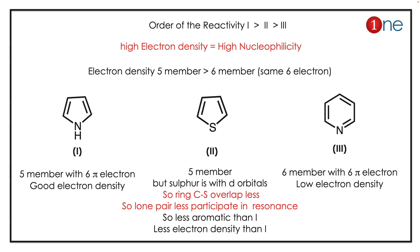The electron density in a five-membered ring is greater than in a six-membered ring because it has the same six electrons distributed over fewer atoms. Analyzing pyrrole first: it has a five-membered ring with six electrons, giving it the highest electron density and ranking it number one.